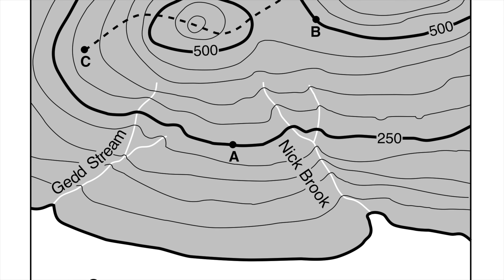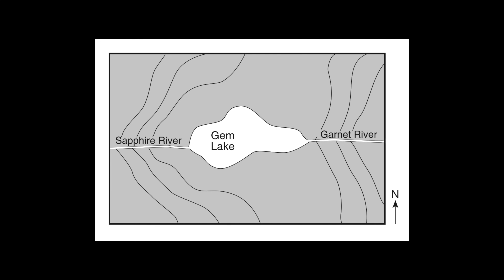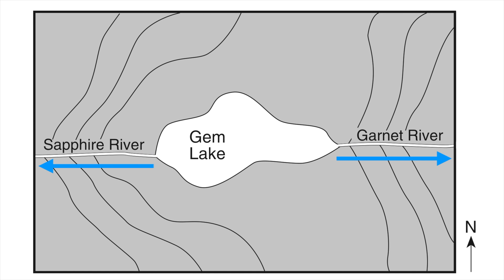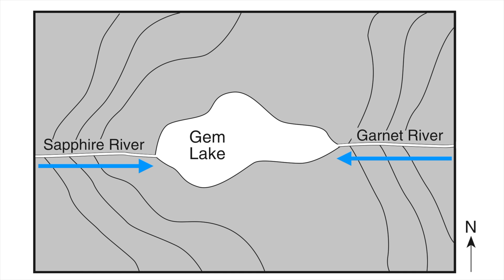Unfortunately it's not always that simple. Take a look at this map. Here I have a lake and two rivers — one towards the western side and one towards the eastern side — and it's my job to figure out where these rivers are flowing. They could both be flowing to the east, they could both be flowing to the west, Sapphire River could be flowing west and Garnet could be flowing east or vice versa. I don't have the ocean here and I don't have any elevations, so it's very difficult to tell. But fortunately there is a way.